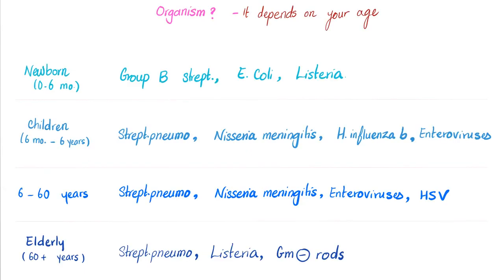I have meningitis — what organism is likely? It depends on age. Newborns: Group B Strep, E. coli, Listeria. Children six months to six years: Strep pneumo, Neisseria, H. influenzae B, and enteroviruses. Six to sixty years (adolescents and adults): Strep pneumo, Neisseria meningitidis, enteroviruses, and HSV. The elderly: Strep pneumo, Listeria comes back, and gram-negative rods.